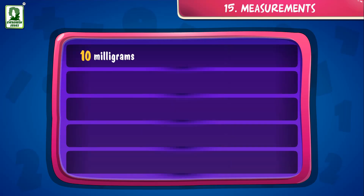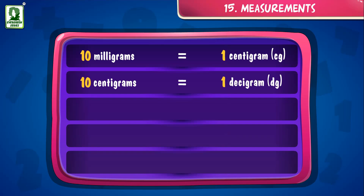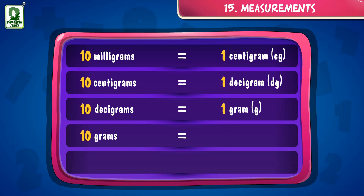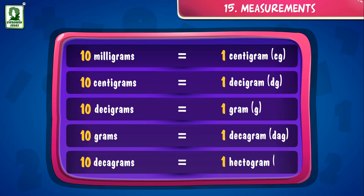10 milligrams is equal to 1 centigram. 10 centigrams is equal to 1 decigram. 10 decigrams is equal to 1 gram. 10 grams is equal to 1 decagram. 10 decagrams is equal to 1 hectogram.